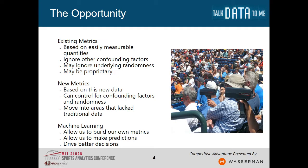How can I handle those confounding factors? There's a lot of underlying randomness in sports — how do I handle that randomness and learn what really matters? From my perspective as a fan, a lot of these metrics are proprietary. I may know what someone's saying, but I don't know what they're doing or how to evaluate it. But with automated machine learning, I can begin looking at new metrics, base them on new data, control for confounding factors and randomness, and move into areas that have lacked traditional data.